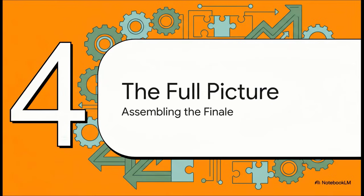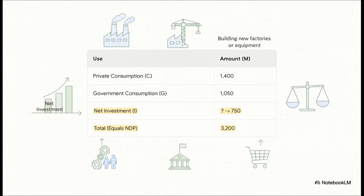We have all the pieces: the government piece, the household piece. Now it's time for the grand finale. We know the total size of the pie — our NDP — is $3,200. We know people consumed $1,400 and the government consumed $1,050. So what happened to the rest of it? That last piece is what we call investment — stuff like building new factories or buying new machinery. For the math to balance, investment has to be $750 million.